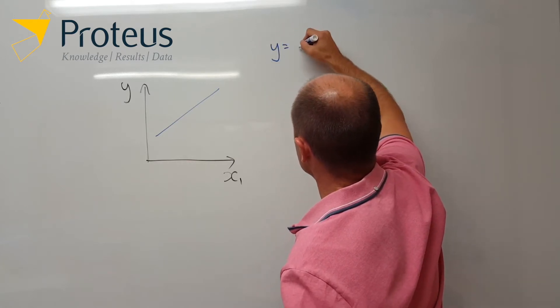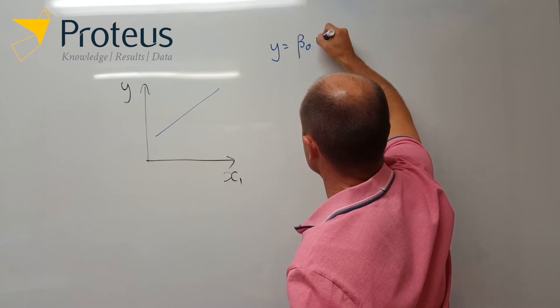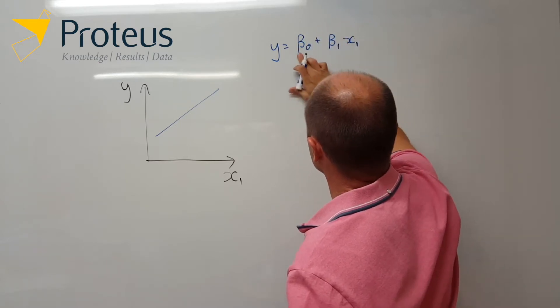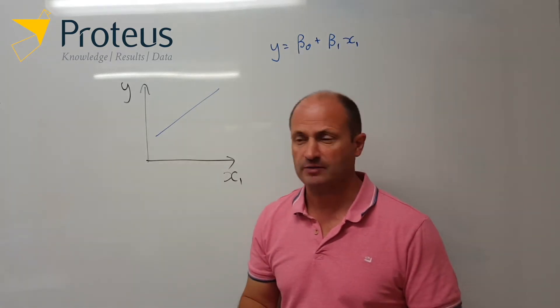And then we've got the beta 1, x1, and some sort of error term which we won't worry about at the moment.